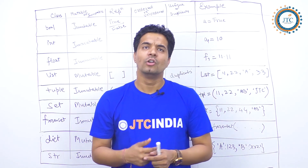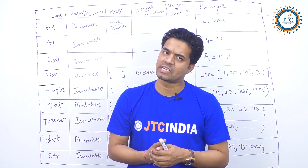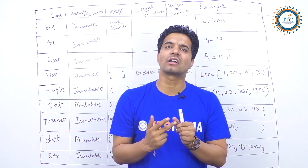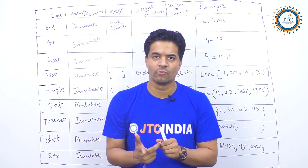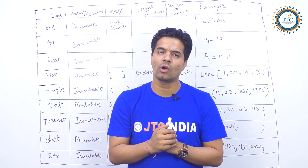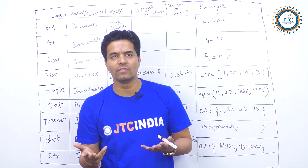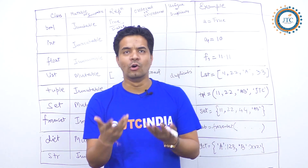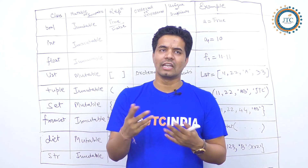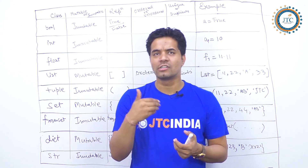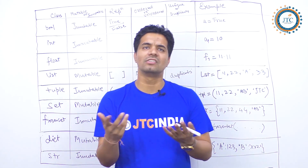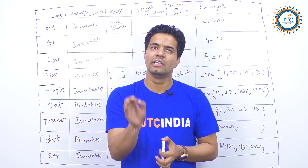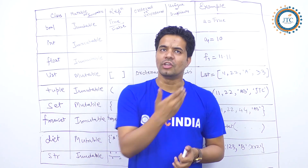In general, there are majorly two types of data types: one is numeric and the second is the collections type. In numeric we have bool, int, and float. In collections we have list, tuple, set, and dictionary — these are available under the collections type.